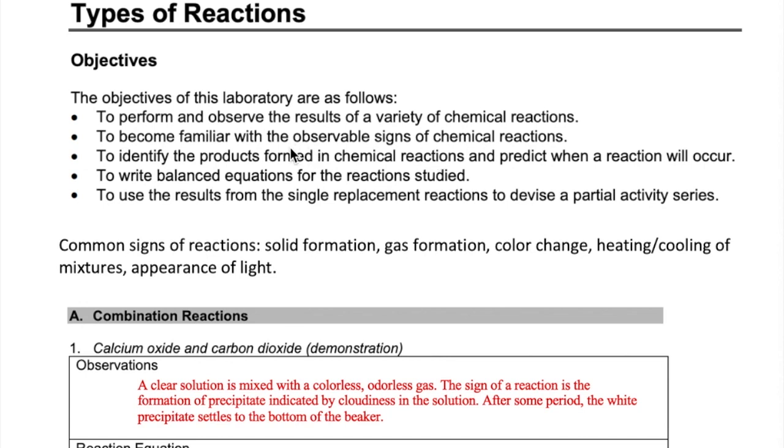The goals are to observe common signs of a chemical reaction, which could be either formation of a solid or gaseous product, change in color or temperature of the mixture, or the appearance of light. Once you observe that a reaction takes place, you must write a balanced equation for the reaction and then, in specific instances, either use the reactions to create a partial activity series or write a net ionic equation.